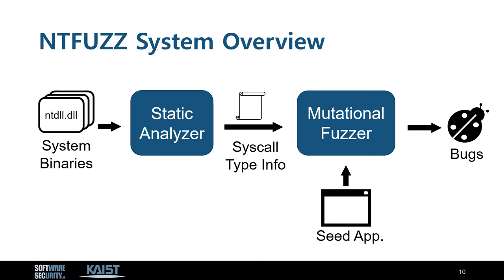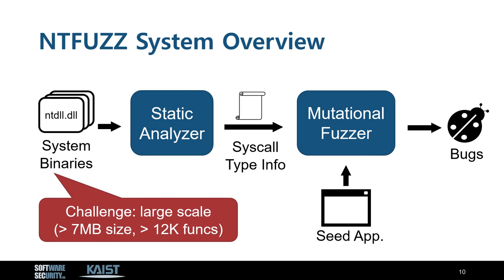With this idea, we design and implement NT-Fuzz that enables type-aware syscall fuzzing on Windows. NT-Fuzz takes in system binaries as input, analyzes these binaries, and obtains type information about syscalls. Then the fuzzing module takes in this type information together with a seed application in order to perform mutational fuzzing on the syscall payload. As a final result, NT-Fuzz outputs a set of kernel bugs. However, analyzing system binaries is challenging due to their large scale. We will take a closer look at how our static analysis operates and deals with this challenge.